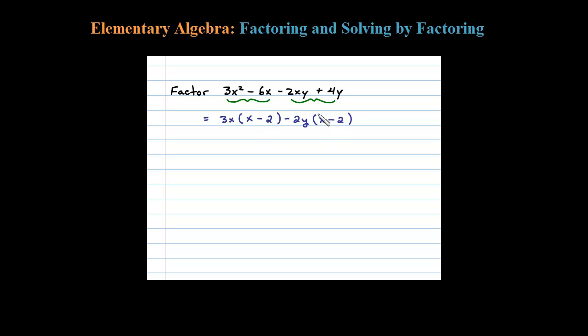Now these two terms have an x minus 2 in common. So if I factor out that x minus 2, well then what will be left? You could see here 3x minus 2y will be left.